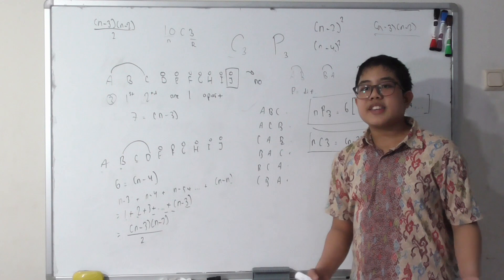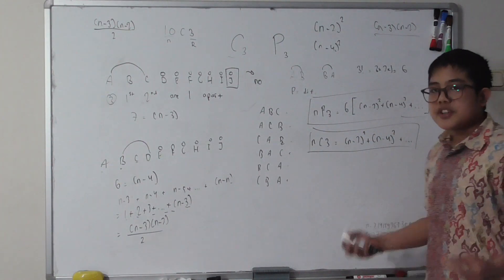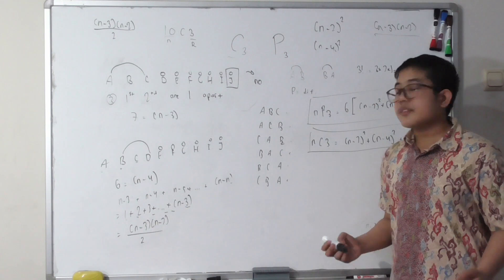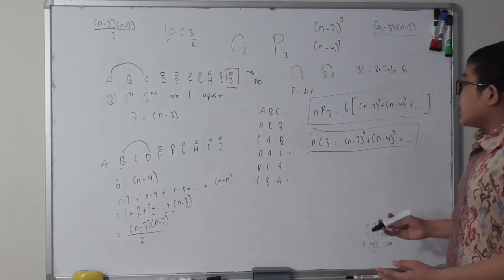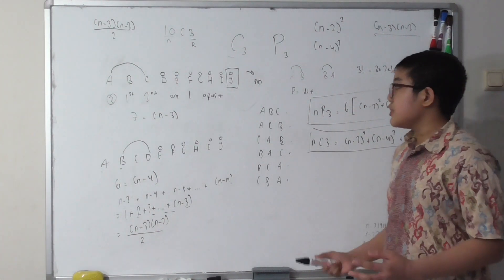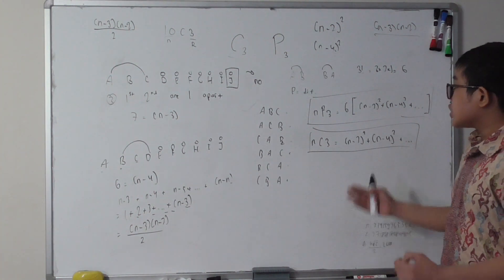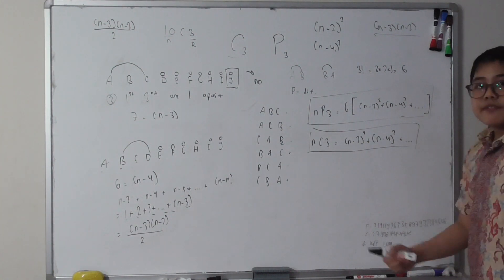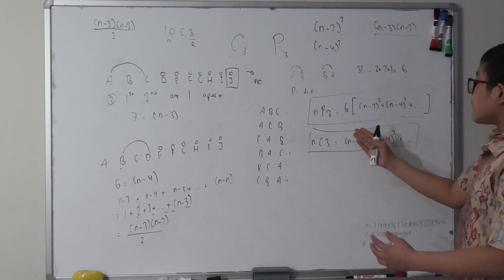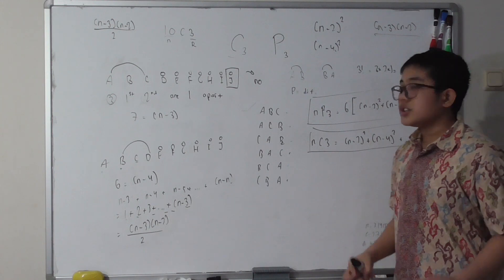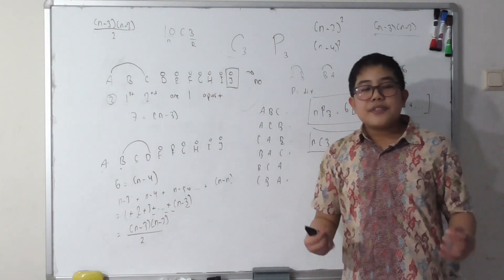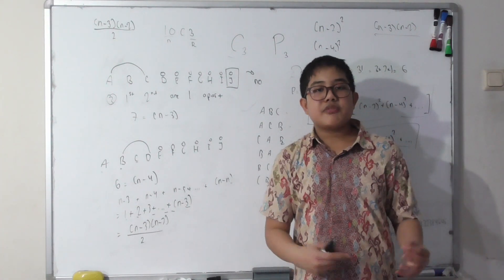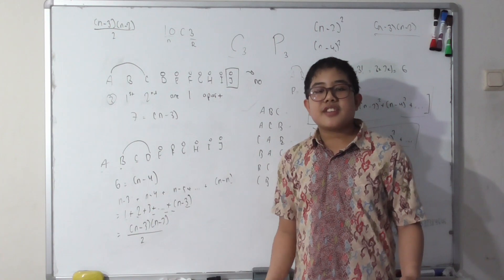Before this video ends, I want to say that these equations are quite long and I don't expect anyone to use them for everyday combination and permutation calculations — just stick to the standard formula from school. The purpose of this video is to show how different formulas for the same question can be derived, and it's fascinating that nC3 equals a sum of consecutive perfect squares, and nP3 equals six times that. Thanks for watching, don't forget to subscribe and like!